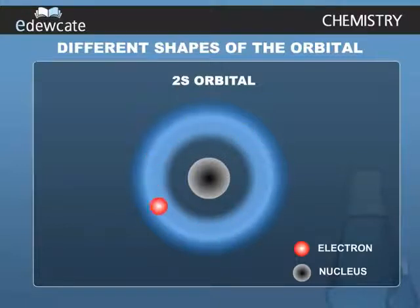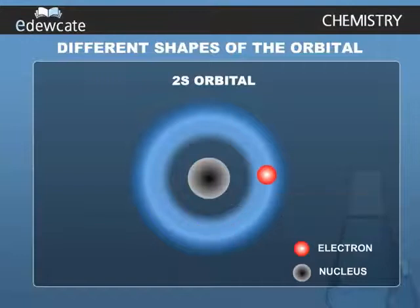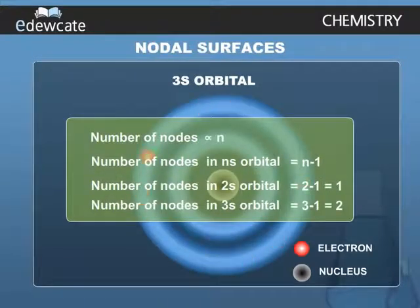The region where this probability density function reduces to zero is called nodal surfaces or simply nodes. In general, it has been found that ns orbital has n-1 nodes. That is, the number of nodes increases with increase of principal quantum number n. In other words, the number of nodes for 2s orbital is 1, 2 for 3s orbital and so on.